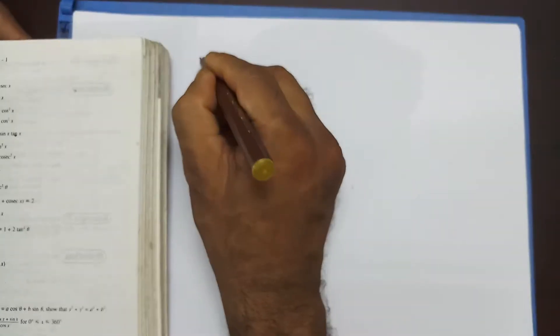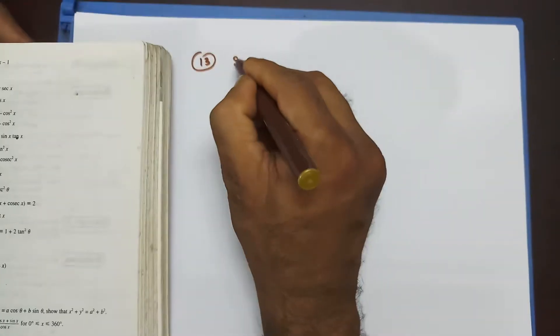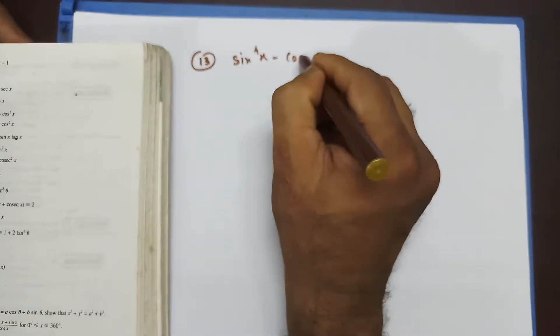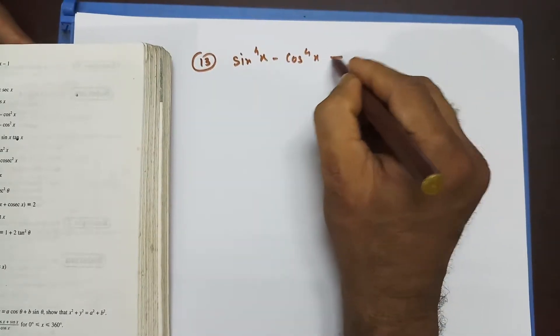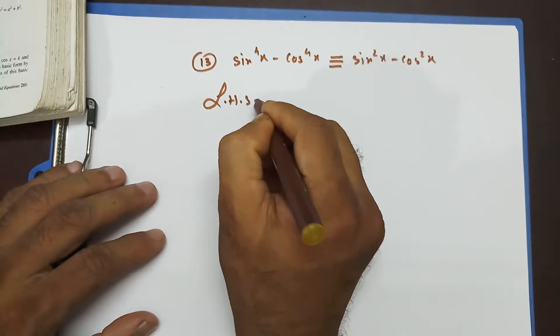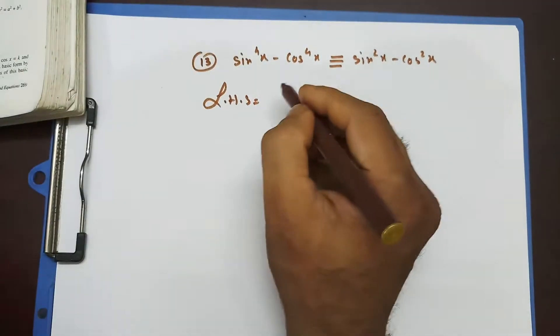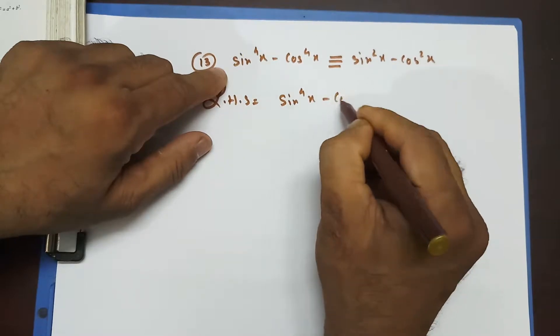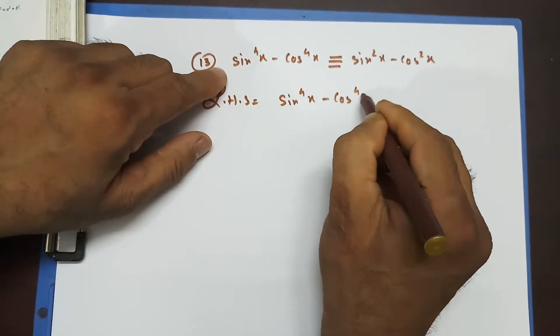Question number 13 says: sin⁴x minus cos⁴x is identical to sin²x minus cos²x. We're going to start from the left hand side, and that's sin⁴x minus cos⁴x.